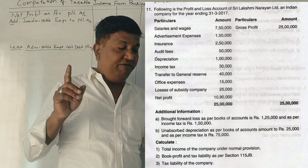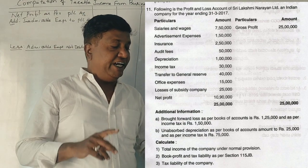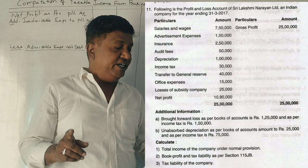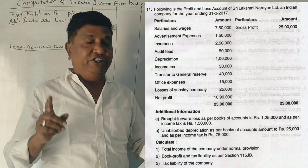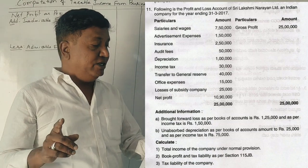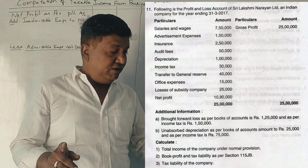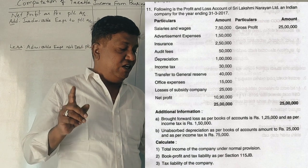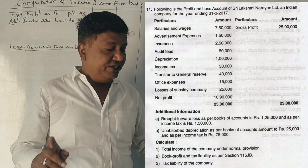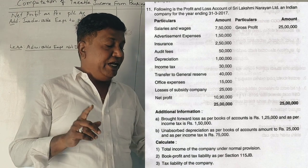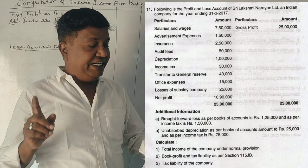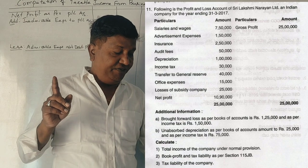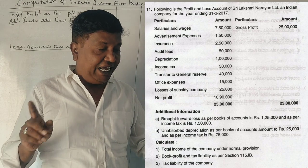The P&L items include: salaries and wages, advertisement expenses, insurance, audit fee, depreciation, income tax, transfer to general reserve, office expenses, loss of subsidiary company, and net profit of 10,90,000. The gross profit is 25,00,000.